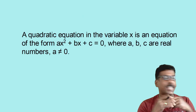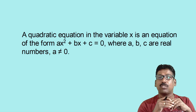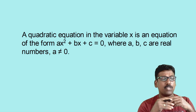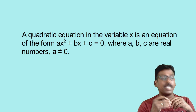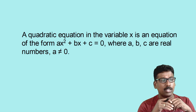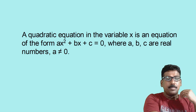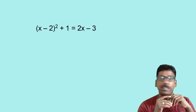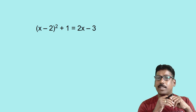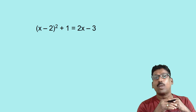So in general we can say: a quadratic equation in the variable x is an equation of the form ax squared plus bx plus c is equal to 0, where a, b, c are real numbers and a is not equal to 0. Now let me take an equation. You have: (x minus 2) whole squared plus 1 is equal to 2x minus 3. You have to check whether this equation is quadratic or not.